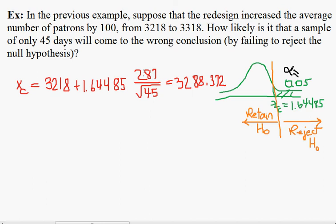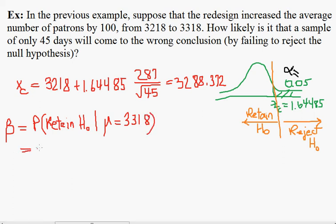So the next step is to figure out what's the chance of this happening. Beta is the probability that we retain the null hypothesis when the population mean has changed to 3318. What does it mean to retain the null hypothesis? We retain the null hypothesis when the sample average is less than 3288.372. That's when we retain the null hypothesis.